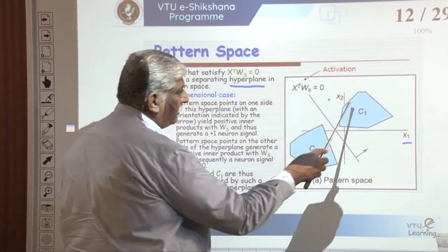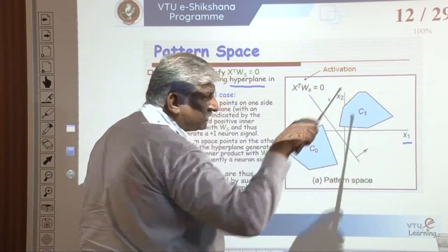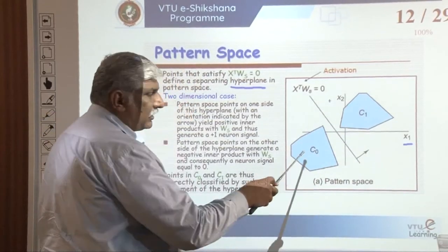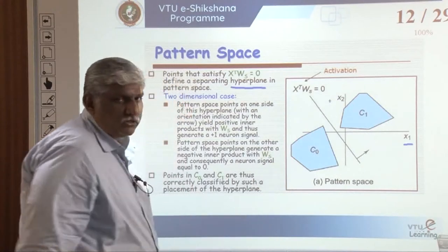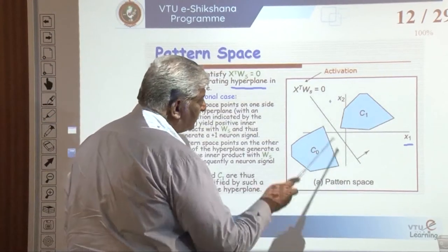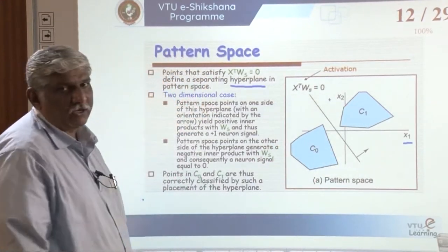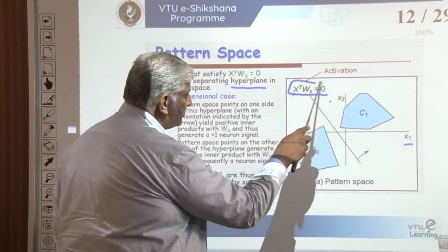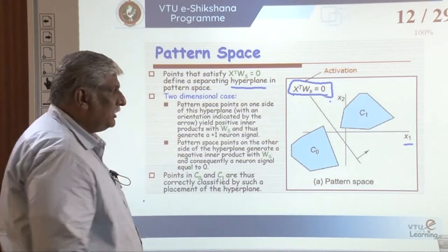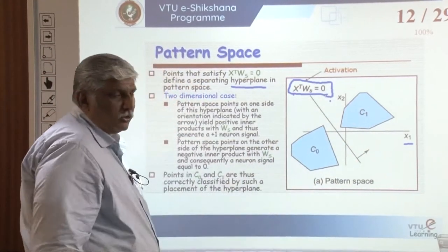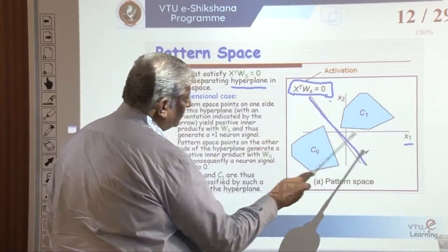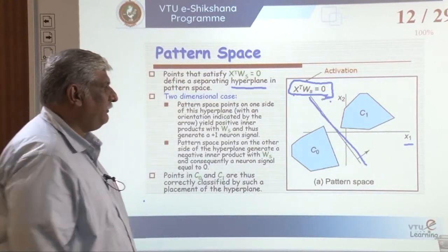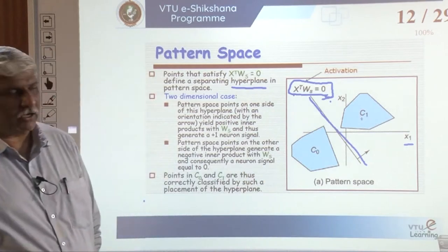Any data inside the inner region is another convex hull, categorized as C0. These two categories are separated by a hyperplane. The equation X-transpose times W equals zero must pass through the origin, because here we have positive values on one side and negative values on the other, so zero must be in between. We have category C1 and category C0. We will see the two-dimensional case as shown in the figure.